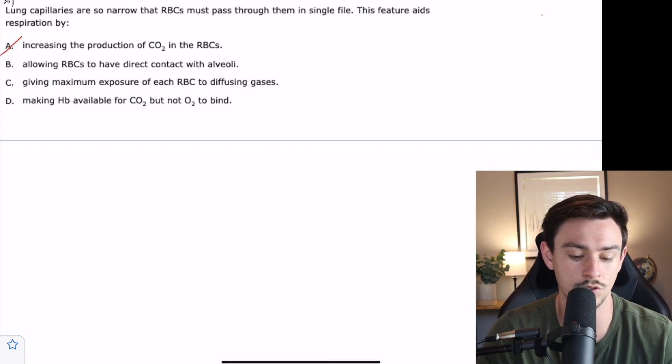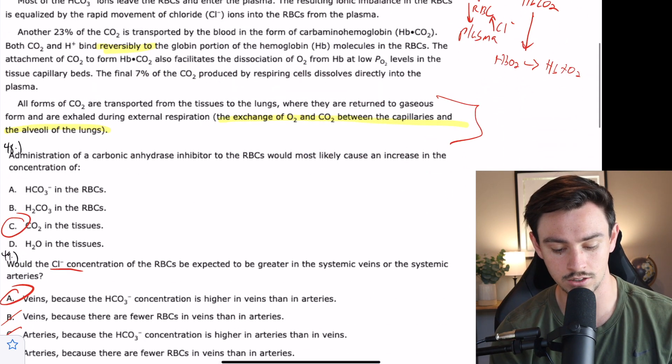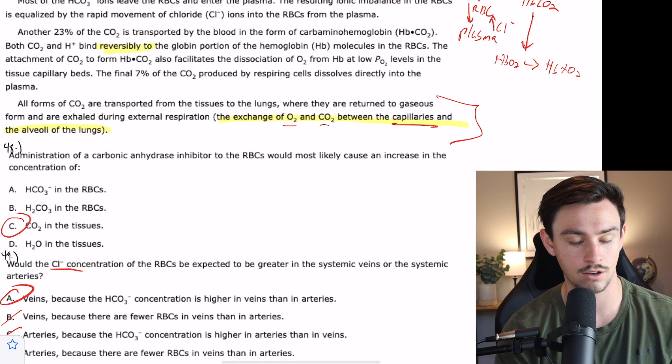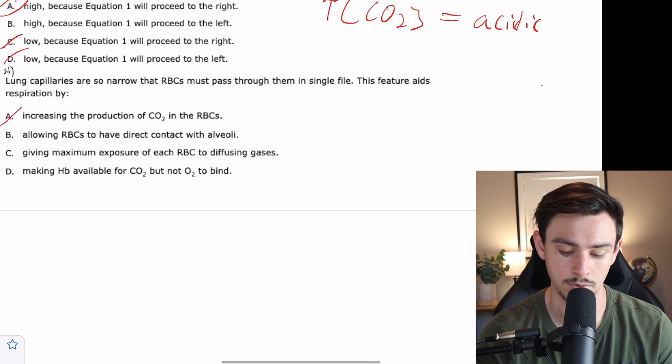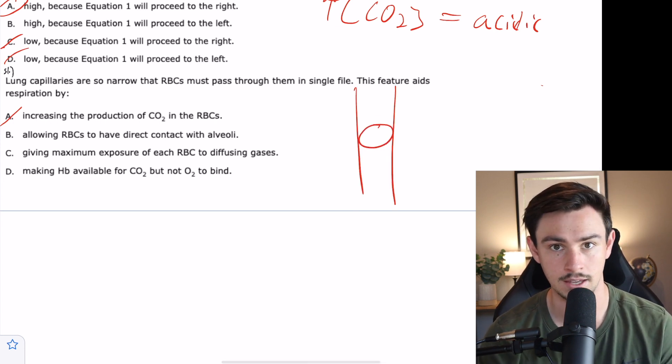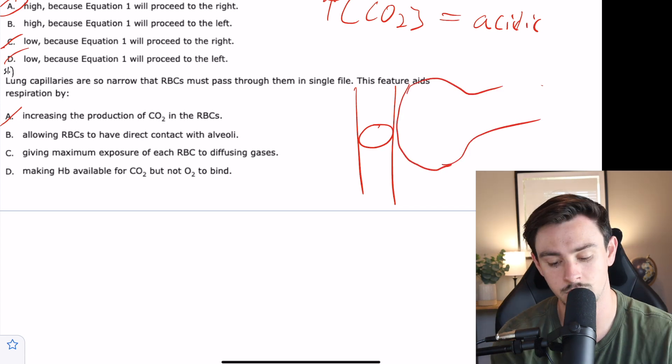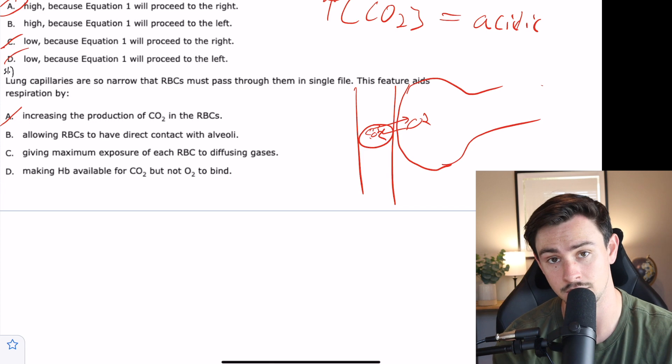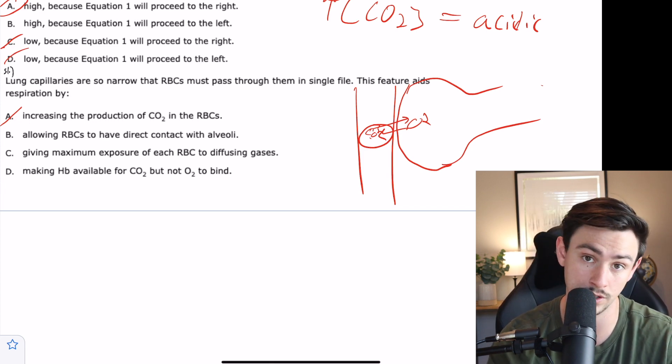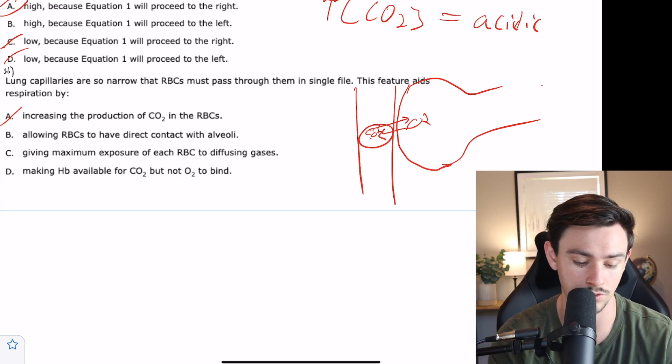B says allowing red blood cells to have direct contact with the alveoli. If you remember here, they said there's an exchange of oxygen and carbon dioxide between the capillaries and the alveoli, not the red blood cells. You have a red blood cell within a capillary, a basement membrane and fluid layer, but then you have your alveoli. So gas actually diffuses through all of these layers rather than the red blood cells going into the alveoli and picking up gas. The capillary touches the alveoli. So maybe not to B.